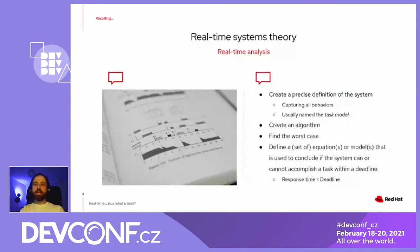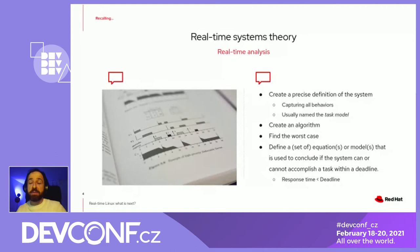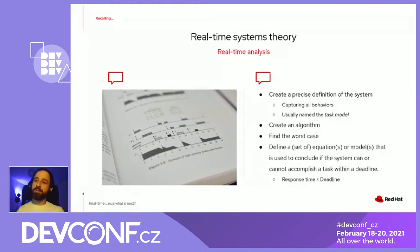In real-time theory, things work like this: we start by creating a precise definition of the system, trying to capture all the behaviors. We then imagine some algorithm, try to define the worst-case scenarios, and come up with formulas to show that results are delivered before the deadline.